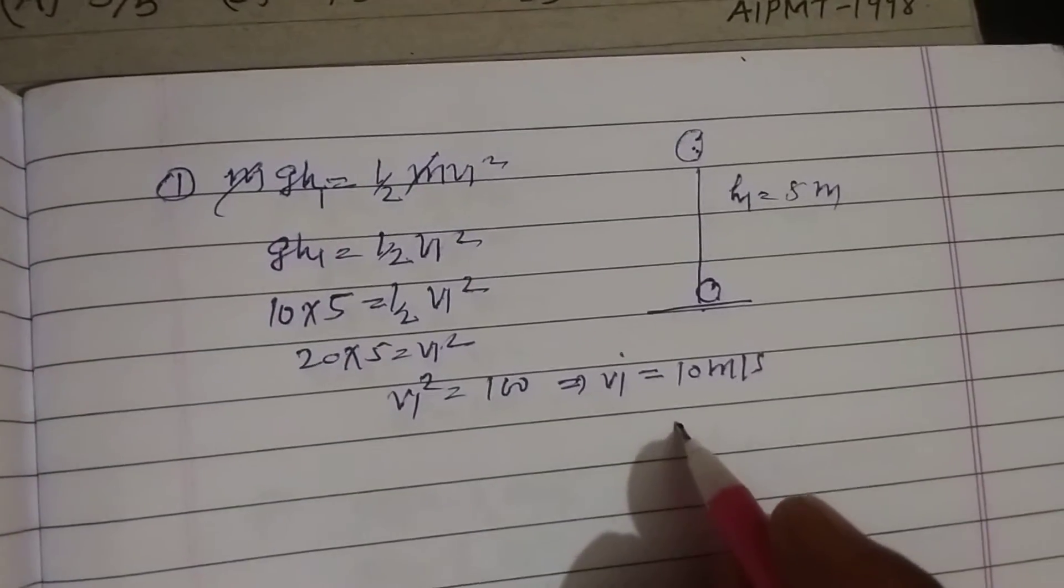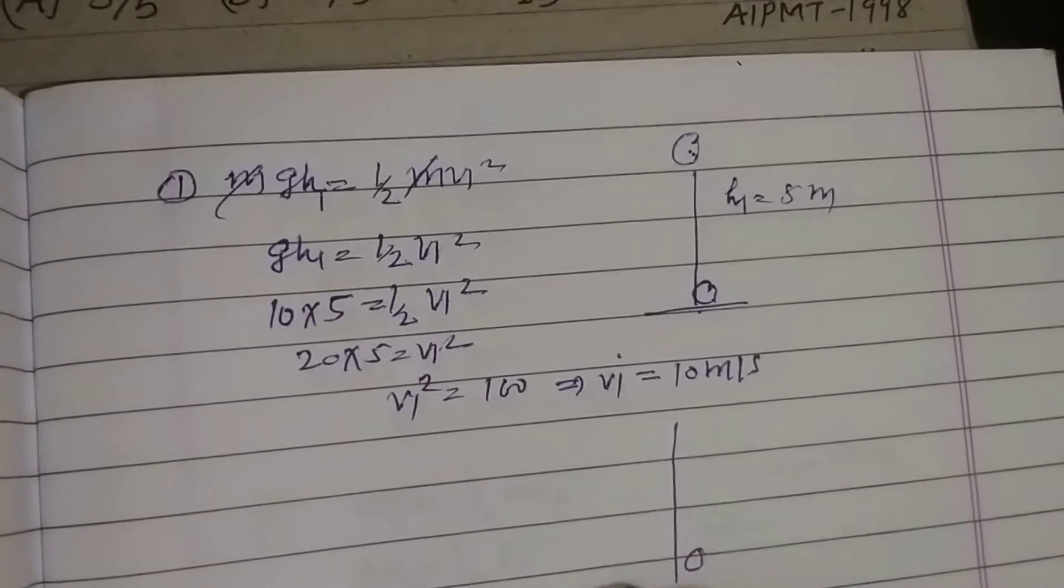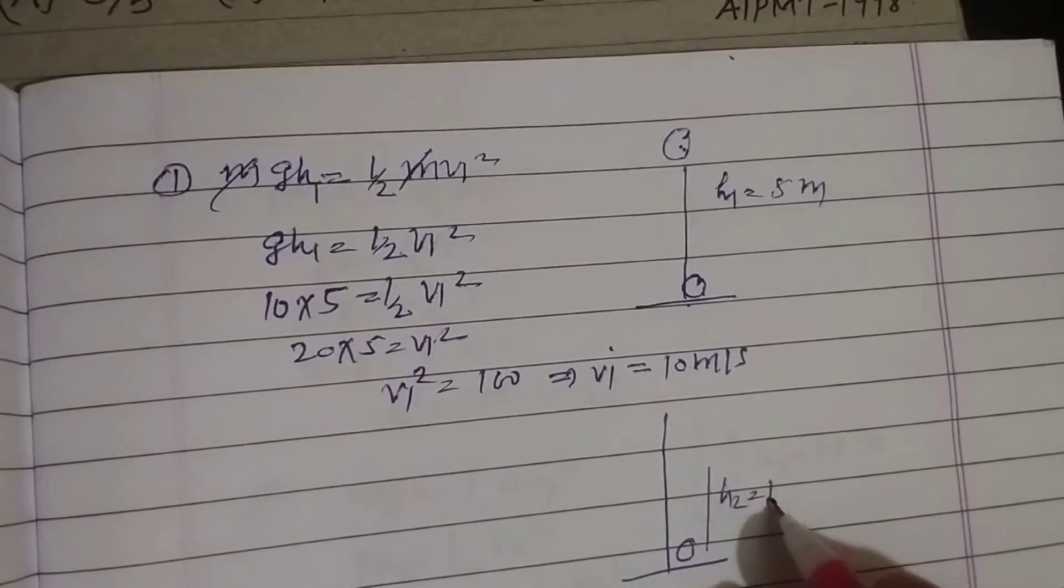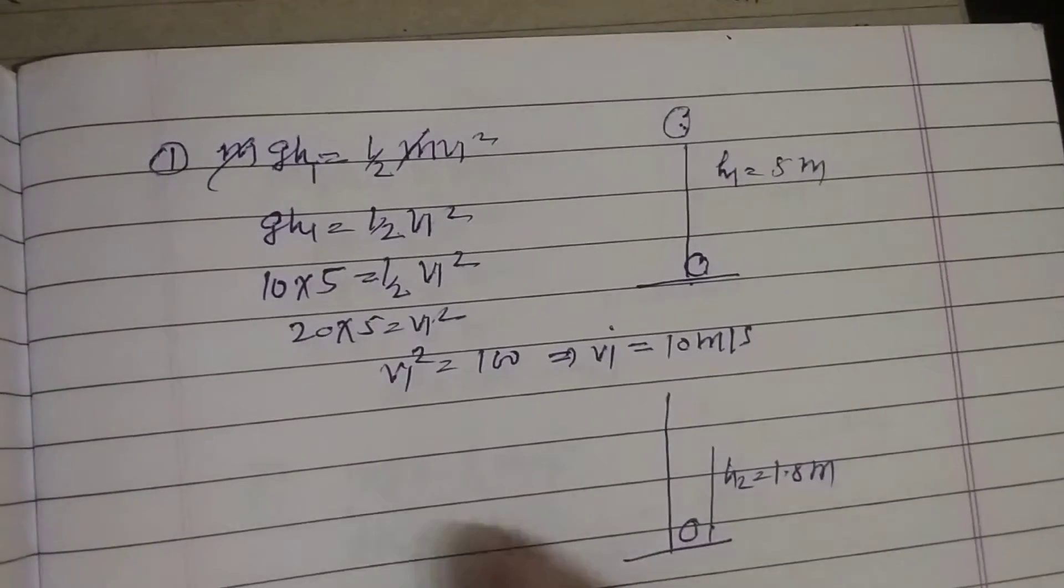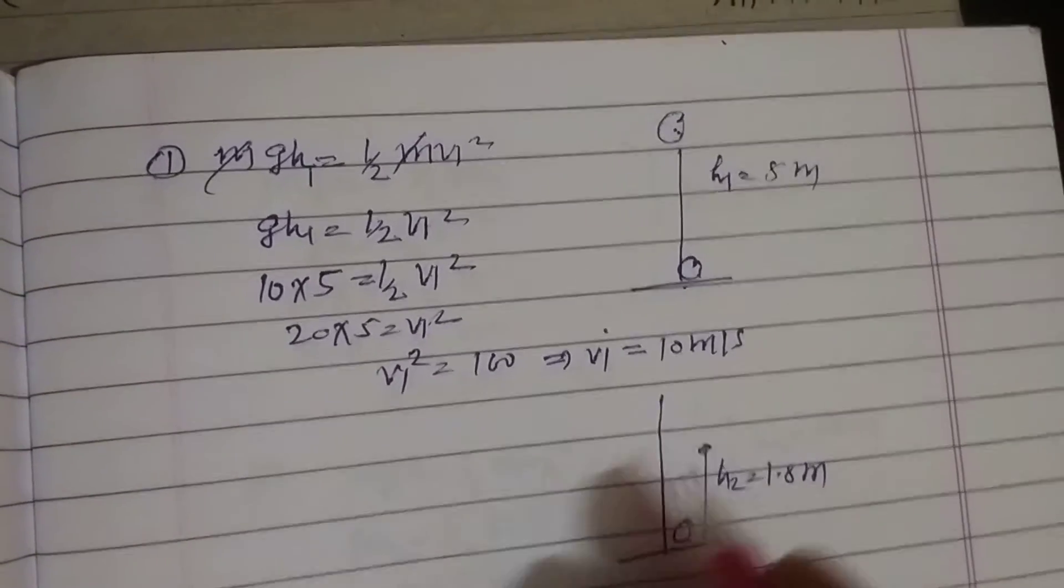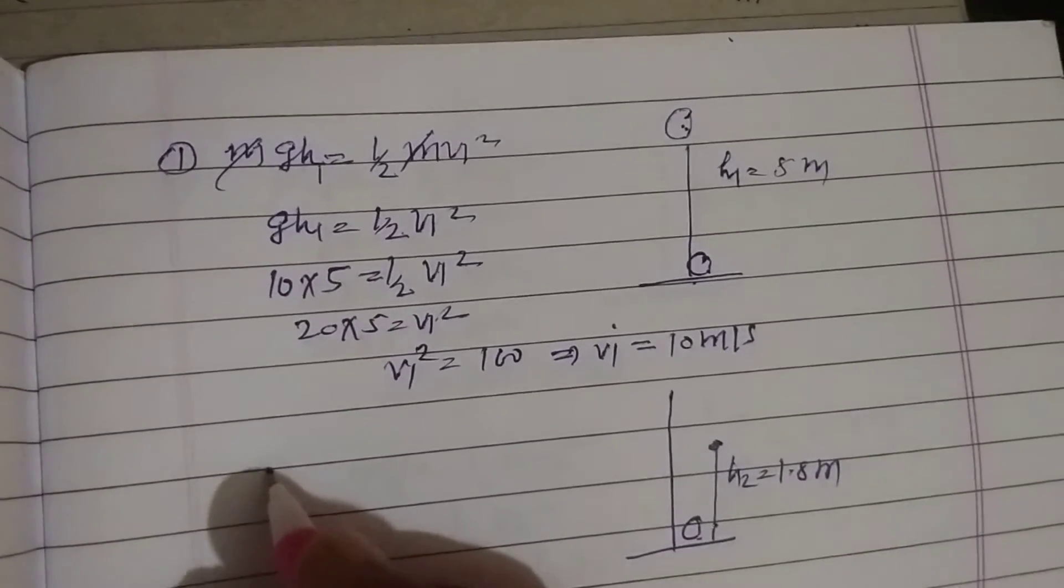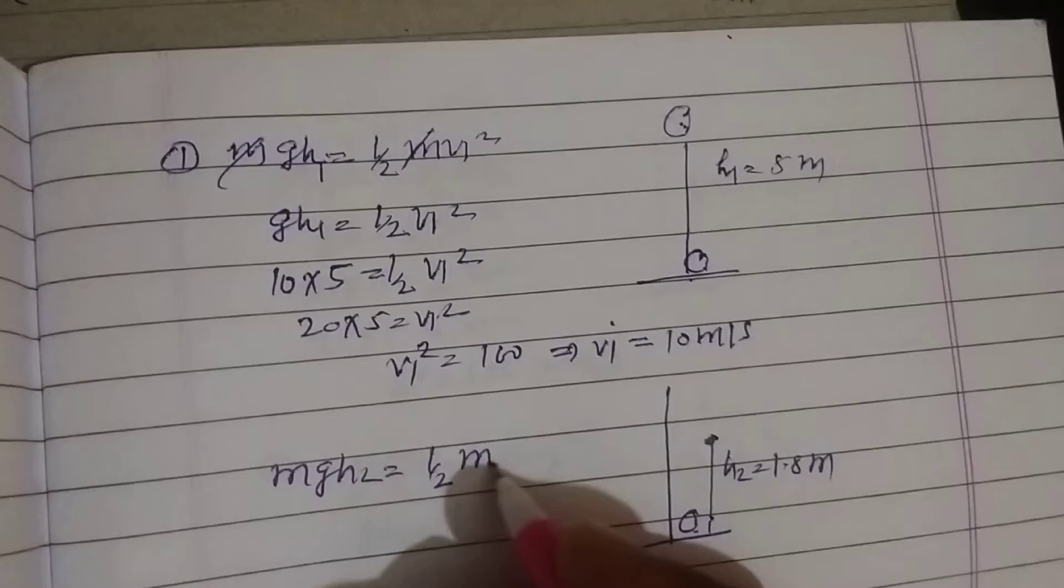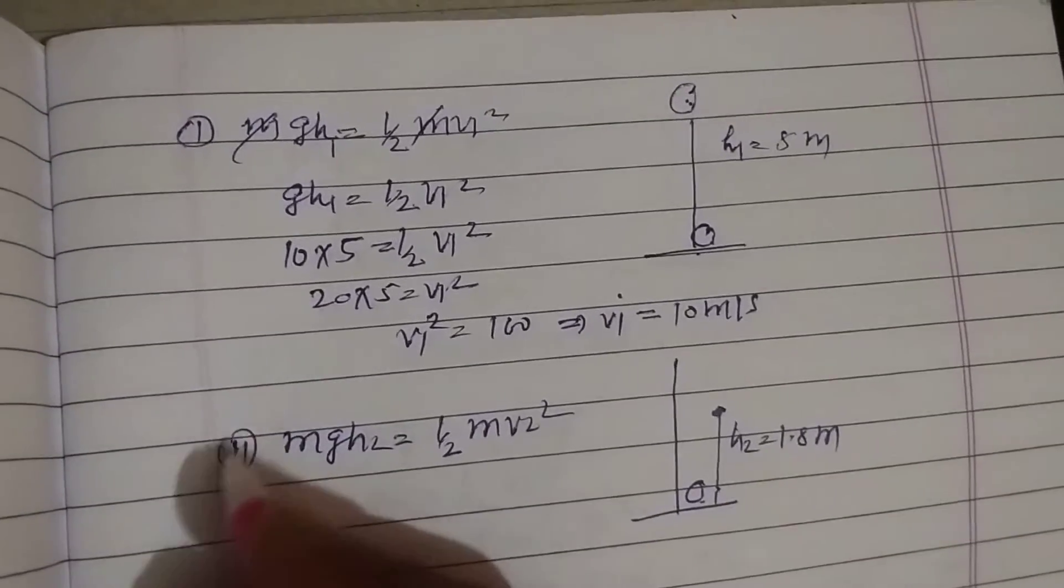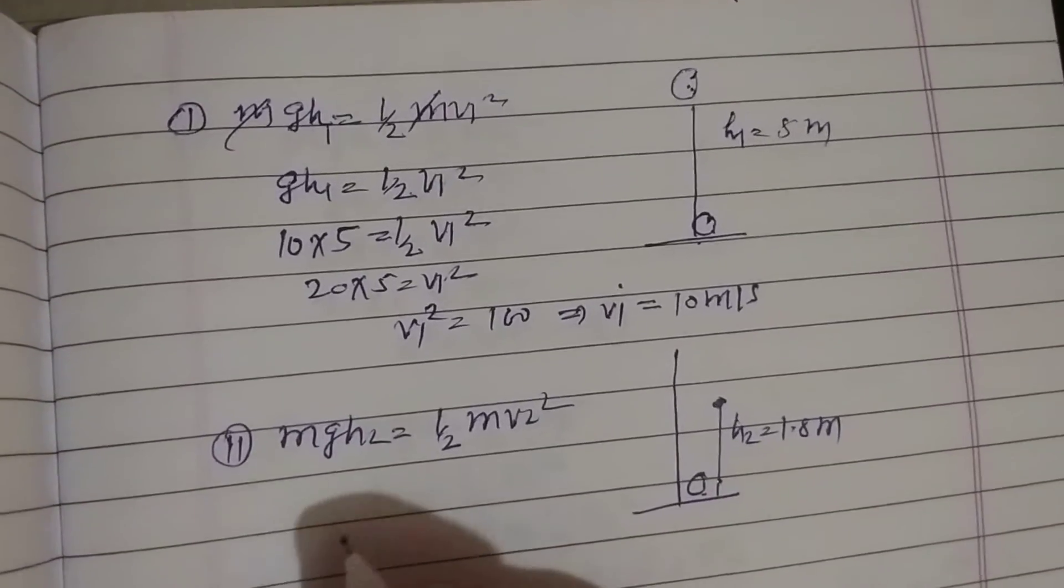After striking, it reaches a height of 1.8 meters. The kinetic energy now changes to potential energy. So mgh2 equals half mv2 squared in the second case when it rises up.